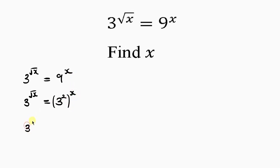This gives us 3 to the power of root X equal to—according to indices, power can multiply power—that means this 2 can multiply X, so we have 3 to the power of 2X. Now since the bases are equal, we can equate the powers. That means I can write root X equal to 2X.